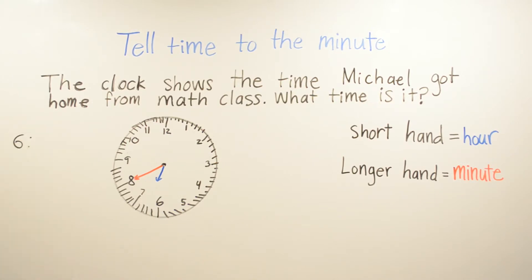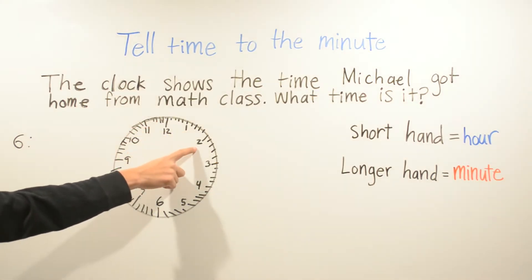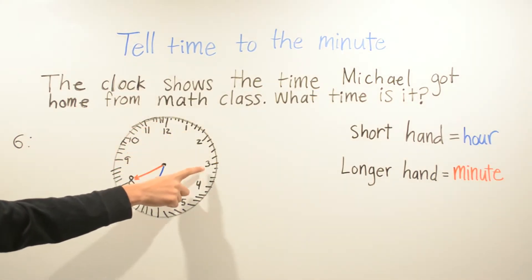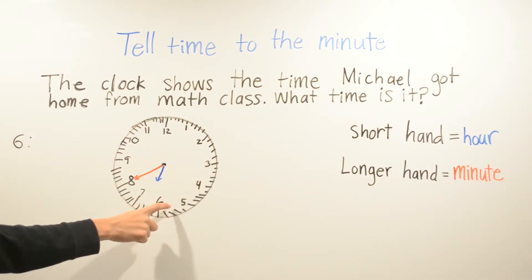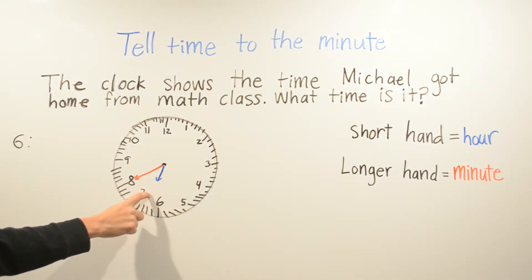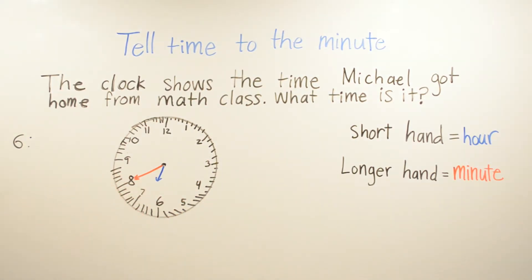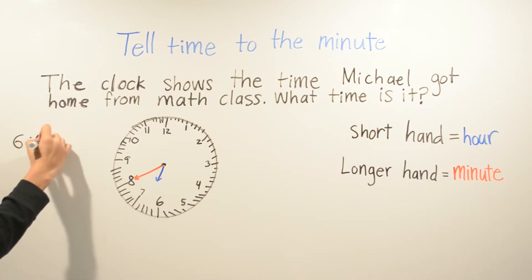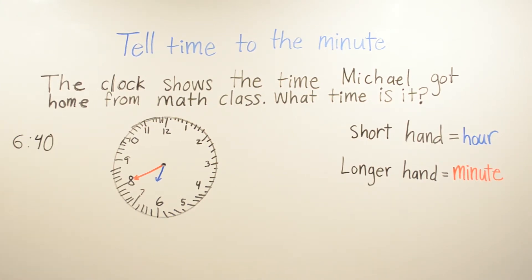And for the minute, when you try to find the minute, you count by fives: 5, 10, 15, 20, 25, 30, 35, 40. So the time is 6:40. The time that Michael got home from math class is 6:40.